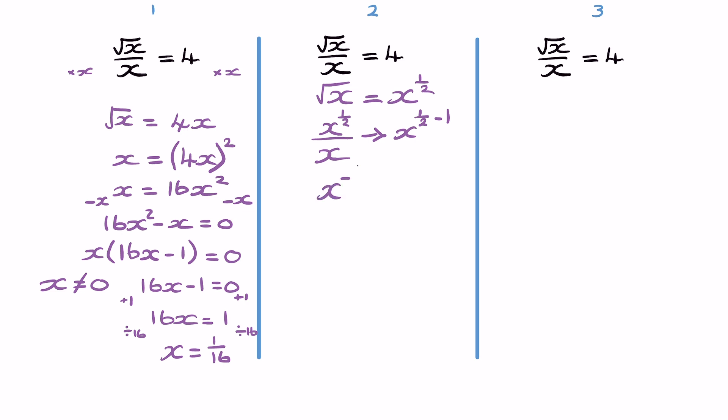So x to the negative one half equals 4. And x to the negative half is the same as 1 over x to the half, which is the same as 1 over root x.